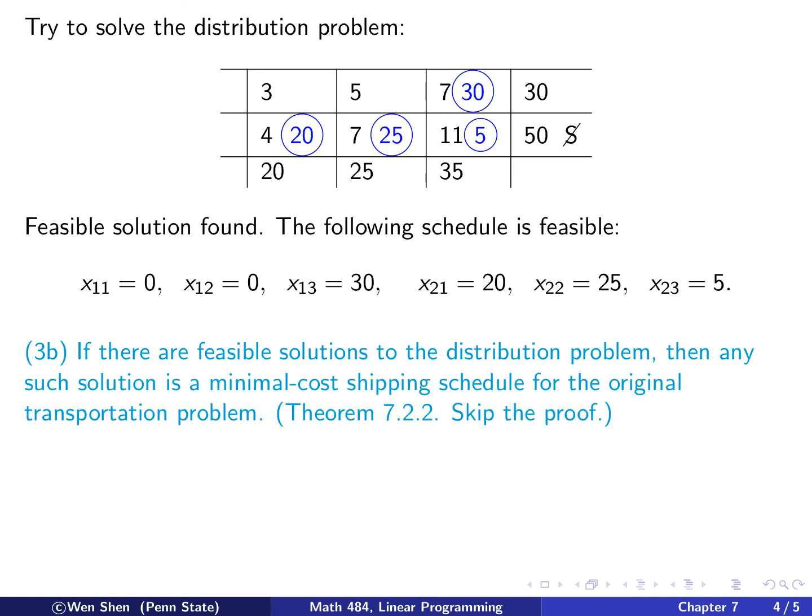So here comes the part B of step 3 in the algorithm. Because 3a is when there's no feasible solution. Now 3b, if now you find a feasible solution to this distribution problem, then any such solution is a minimal cost shipping schedule for the original transportation problem. So this statement is actually in theorem 7.2.2. And we will only present the algorithm here. We will not do the proofs. If you're interested, there's a lot of details in the book. You can go ahead and read that.